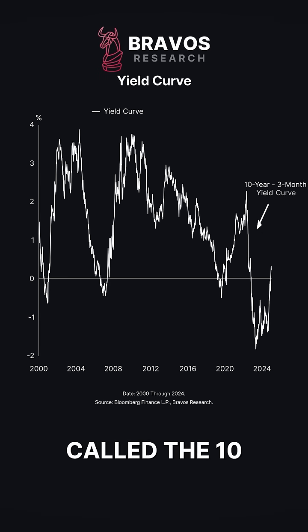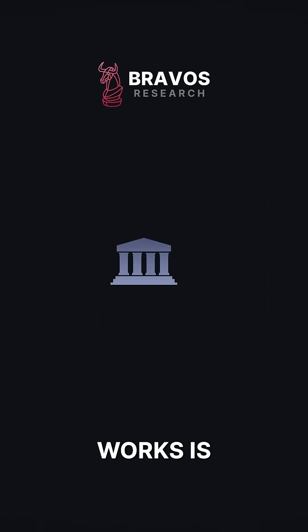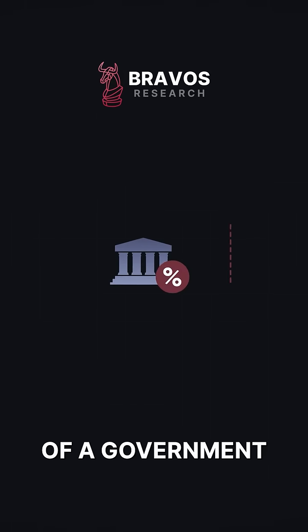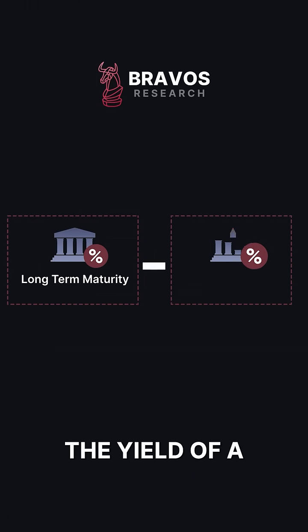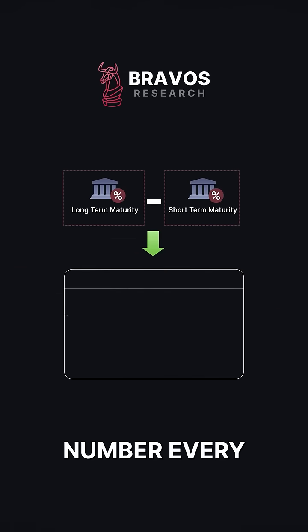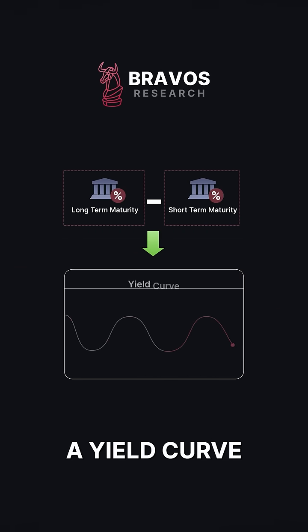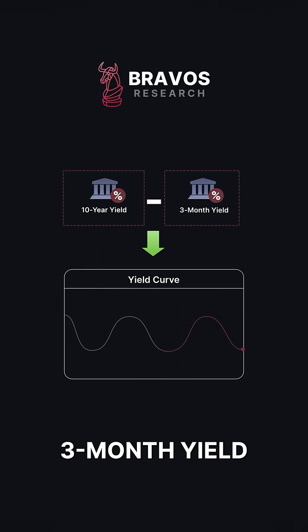This yield curve is what's called the 10-year minus 3-month yield curve, which is basically the maturities of the bonds that make it up. The way the yield curve works is you take the yield of a government bond with a long-term maturity and subtract the yield of a government bond with a short-term maturity. You look at that number every day over a long period of time and you get what looks like a yield curve. The 10-year and 3-month version is a very widely followed one.